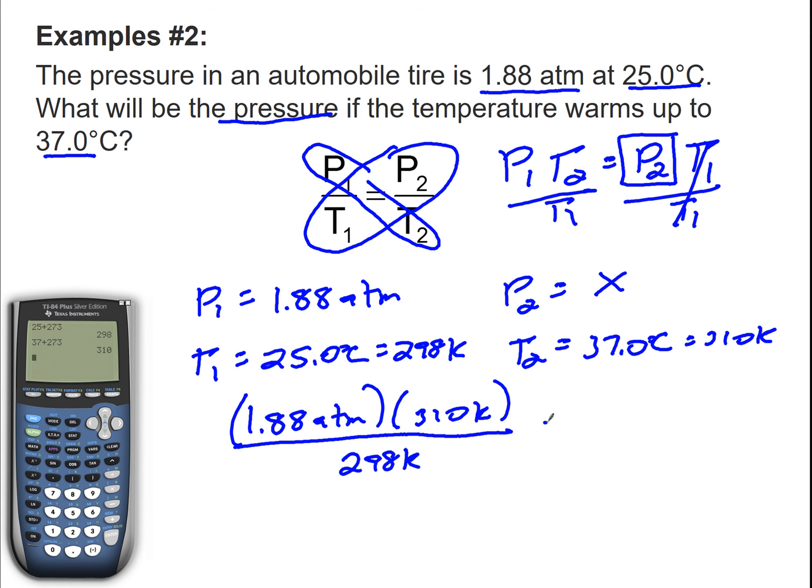I'm done setting it up. All the numbers look like they're in the right spot. I'm going to use the calculator now. 1.88 times 310 divided by 298, and that's going to equal 1.96 atm.